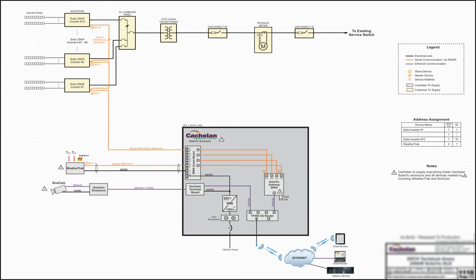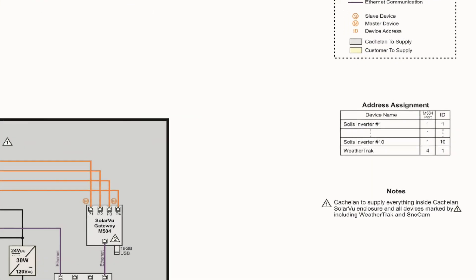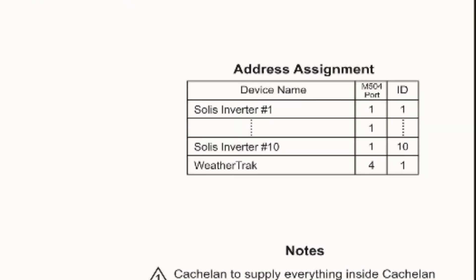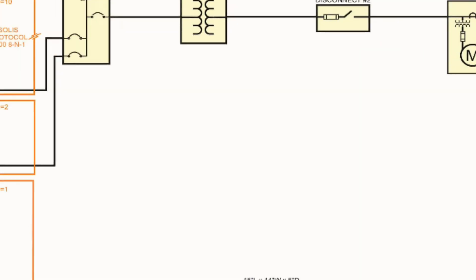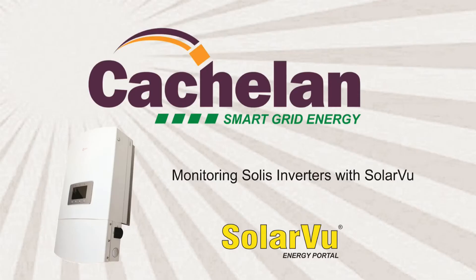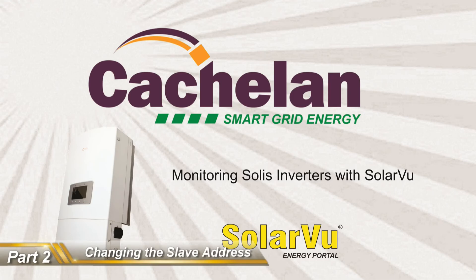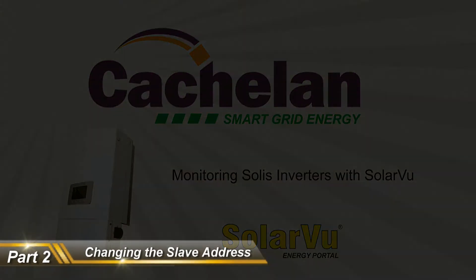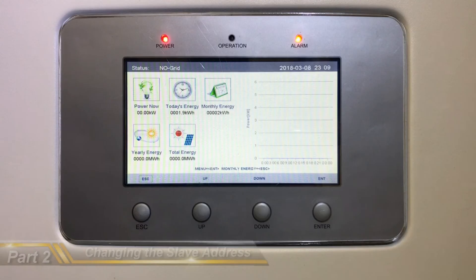Now let's get back to the single line drawing that we used earlier. This drawing will display each inverter's slave ID and inverter number. This information can be found in the address assignment table, or on the actual drawing. Once the inverters are connected, their slave addresses must be configured to match the M504's programming.